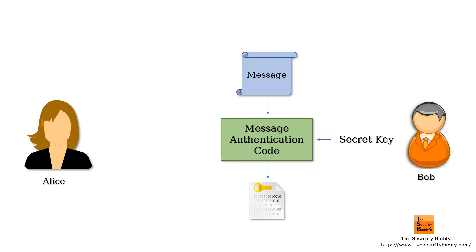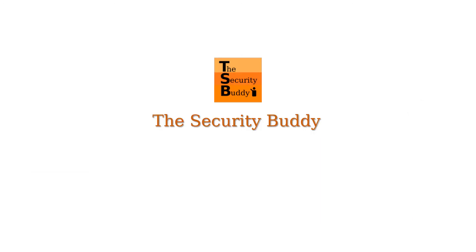Alice can easily claim that she has not generated the message authentication code and that Bob or someone else with knowledge of the secret key has done so.